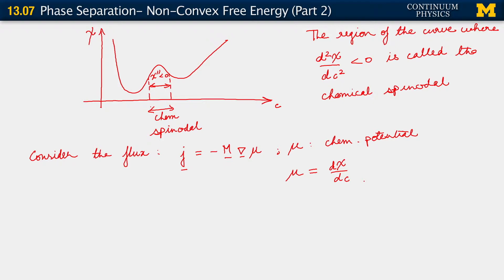Let us go ahead and see what happens because of this chemical spinodal. We can write out this formula in the following form. The gradient of mu is chi prime, because chi is a function of c alone. If we compute that gradient, we see that it is minus M times chi double prime times gradient of c, from the chain rule.